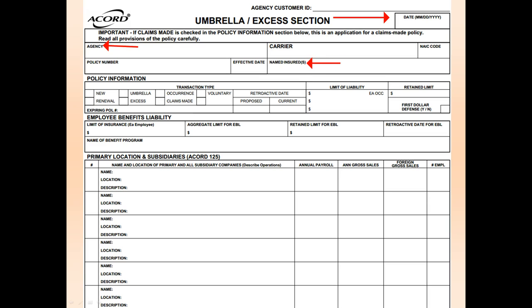Following down to the policy information section, you'll need to check whether this is new business or renewal, whether you're looking for umbrella or excess coverage, and whether you're needing it on an occurrence or claims made basis. Then you can skip over and fill out the limits of liability desired.